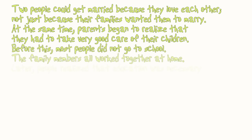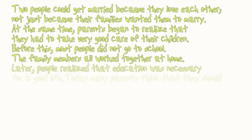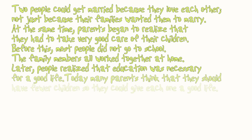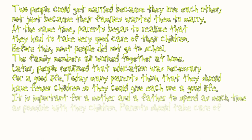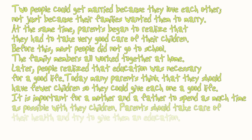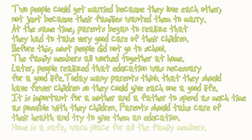Two people could get married because they loved each other, not just because their families wanted them to marry. At the same time, parents began to realize that they had to take very good care of their children. Before this, most people did not go to school — the family members all worked together at home. Later, people realized that education was necessary for a good life. Today, many parents think that they should have fewer children so they can give each one a good life. They think it is important for a mother and a father to spend as much time as possible with their children. They think parents should take care of their children's health and try to give them an education.